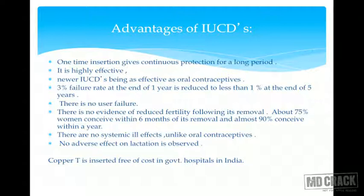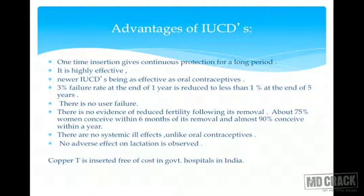Previously the failure rate in the first year was almost 3%, but as use increases it drops to about 1% at the end of 5 years. There is no user failure — the user cannot make a mistake that causes contraceptive failure. There is no evidence of reduced fertility following removal; about 75% of women conceive within six months and almost 90% within a year.